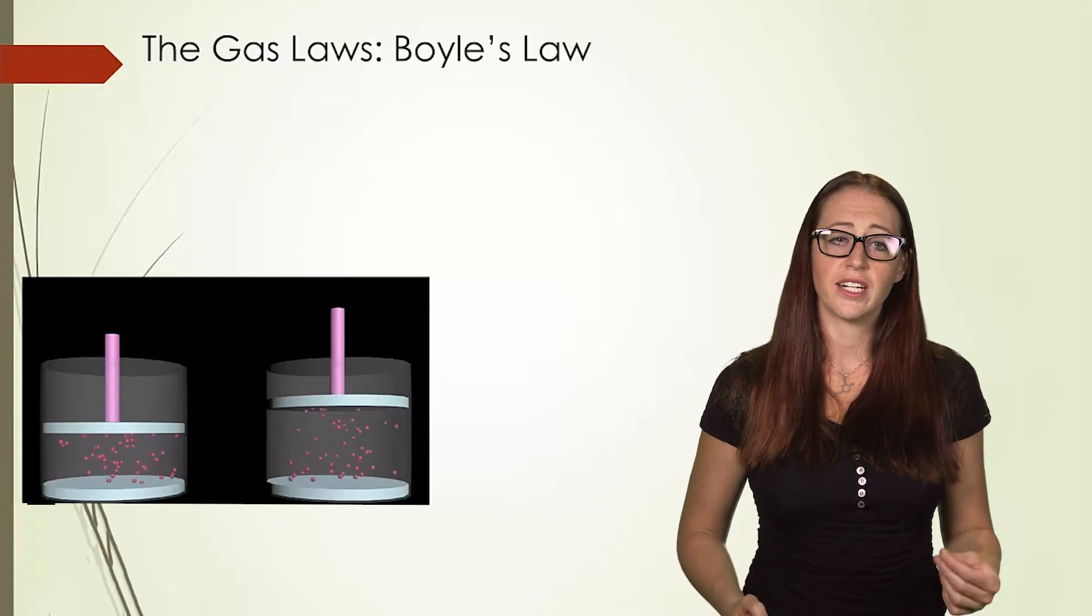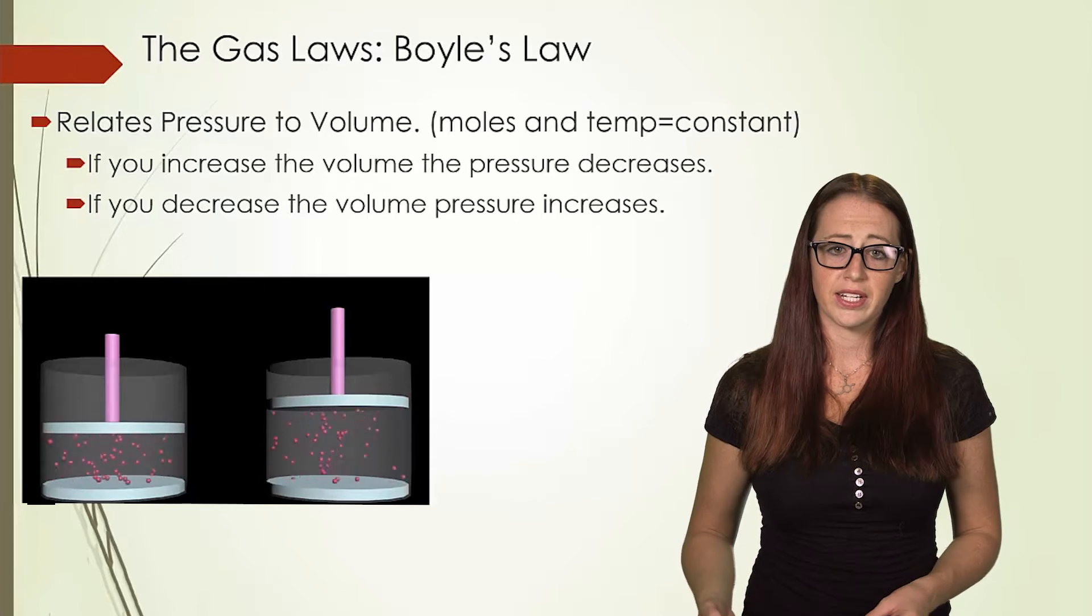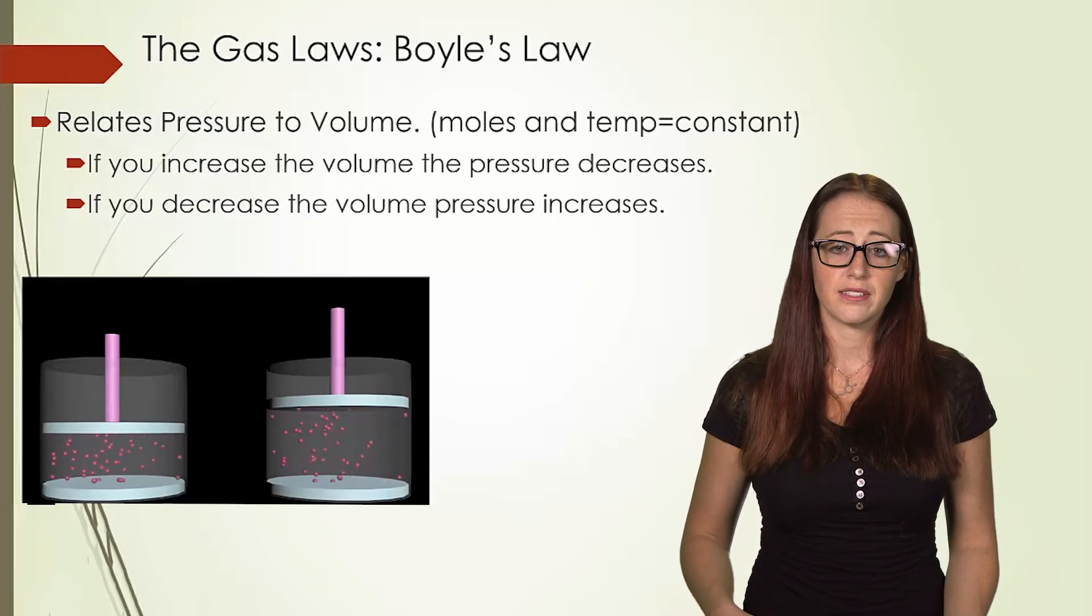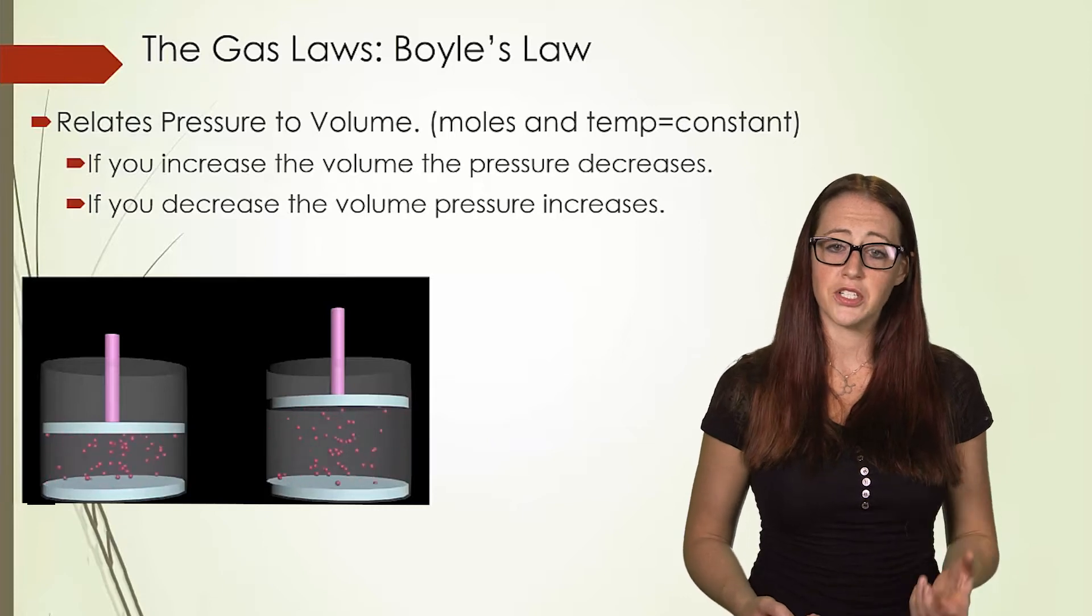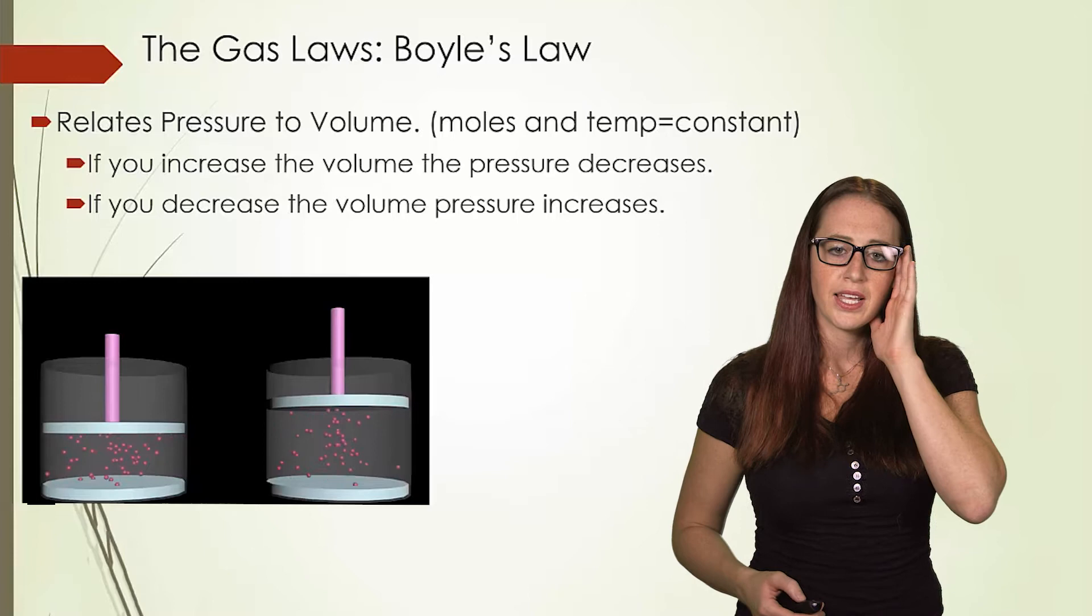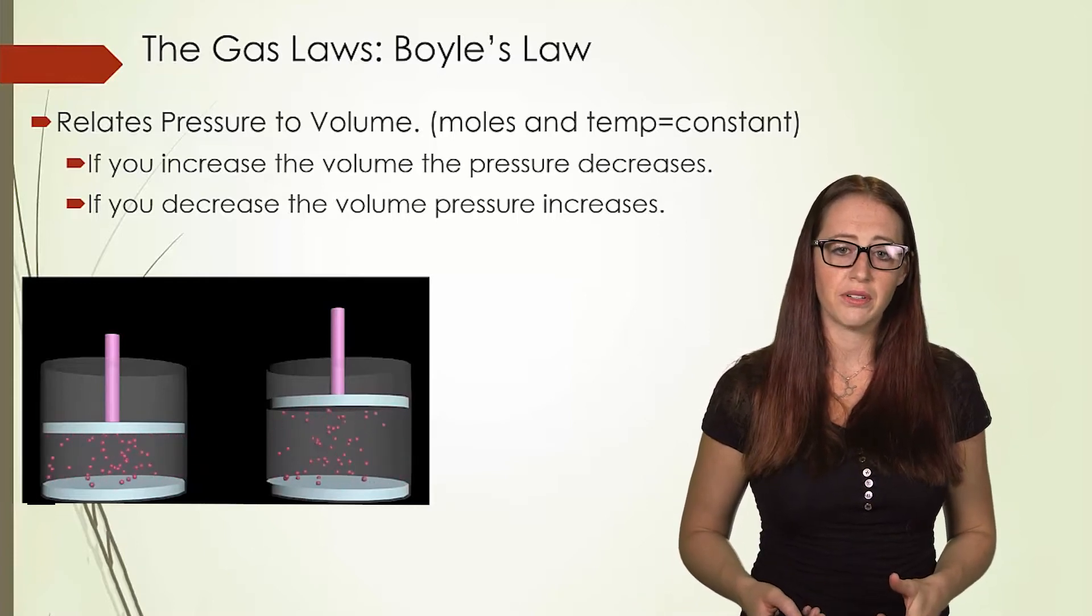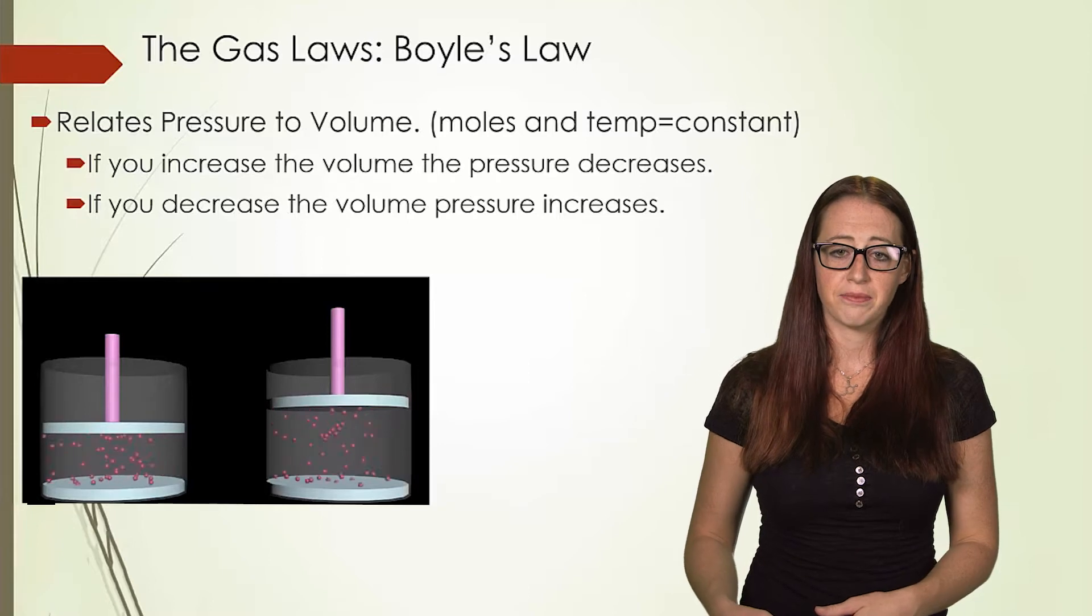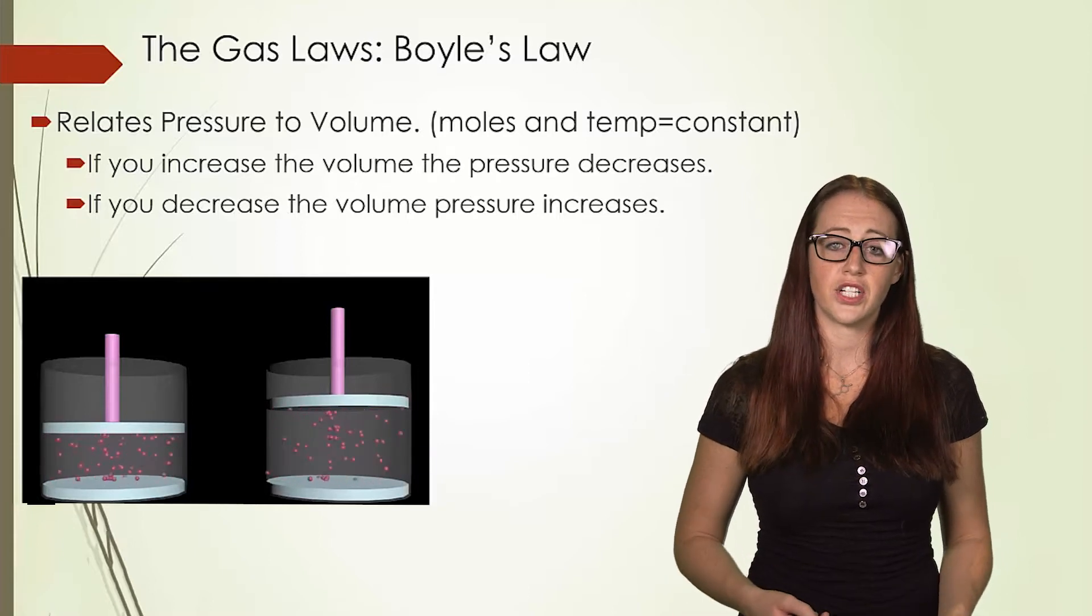So first we're going to take pressure and volume. As the pressure of a system is increased, the volume is decreased. Think of what happens if you press on a piston in a tube. Think about perhaps a closed off plastic syringe. As you increase the pressure on the system by squeezing the plunger down, the volume is decreased. So you can feel the pressure increase as the plunger resists against the change.